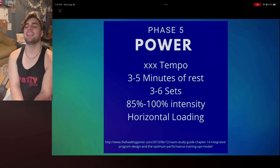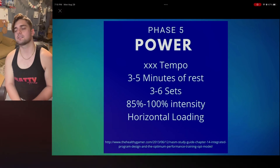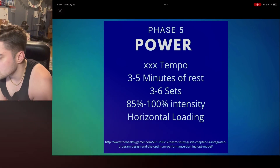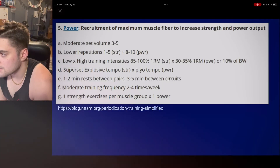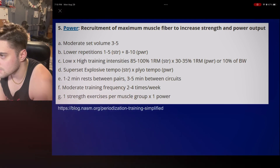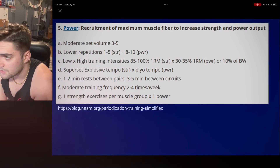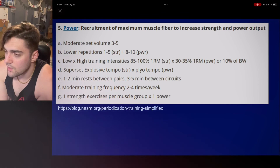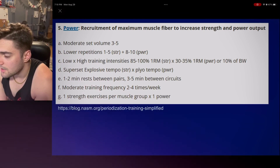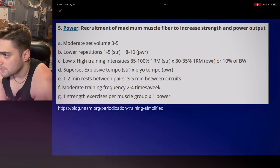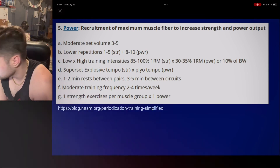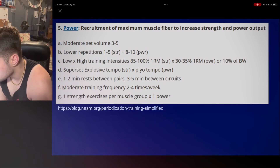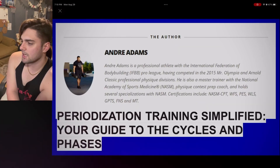Now the big daddy: phase five, power. Tempo is XXXXX — explosive. Three to five minutes of rest. Three to six sets. Intensity 85 to 100%. This is essentially what you'd program for a power lifter: lots of rest, really heavy weight, and low repetitions. Flashcard it, pause the screen, do what you gotta do.